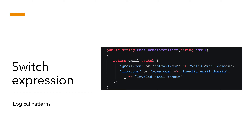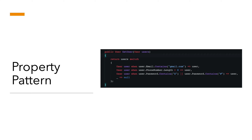With the switch expression, we've reduced those lines of code into just three lines doing exactly the same operation. It says return email switch, and using a logical OR pattern you verify if it's gmail.com or hotmail.com then it's a valid email domain; if something else, invalid domain; if nothing, invalid email domain. This is the logical pattern of switch expressions — much fewer lines compared to the classical approach.